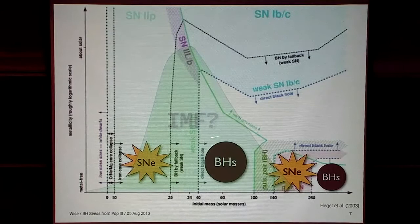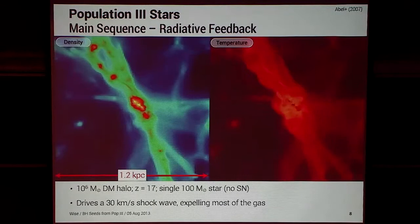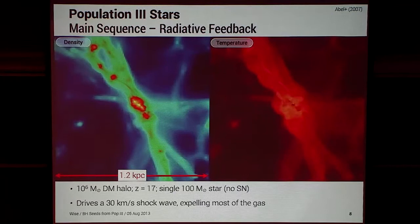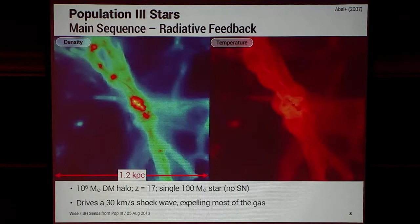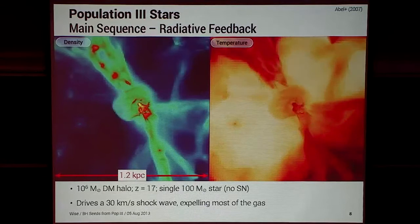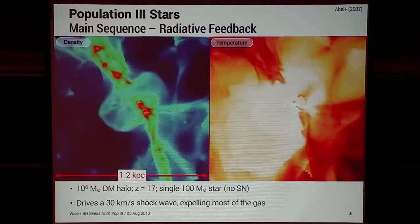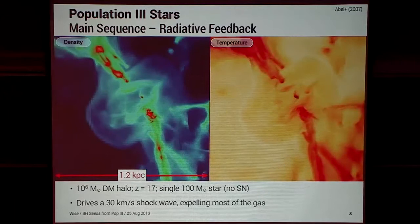There is a problem with actually feeding these stellar mass black holes. It's a matter of the radiation feedback from the main sequence of these Pop III stars, which are thought to be very massive with a characteristic mass of tens of solar masses. In work done six years ago, we simulated a single million solar mass dark matter halo forming two Pop III stars — a hundred solar mass star with no supernovae, just radiation feedback. The HII region grows, breaks out of the halo, and drives a 30 km/s shock — tremendous compared to the 3 km/s escape velocity of these mini-halos. It drives out all the gas, leaving a gas-poor halo — a very harsh environment for the black hole to actually grow.